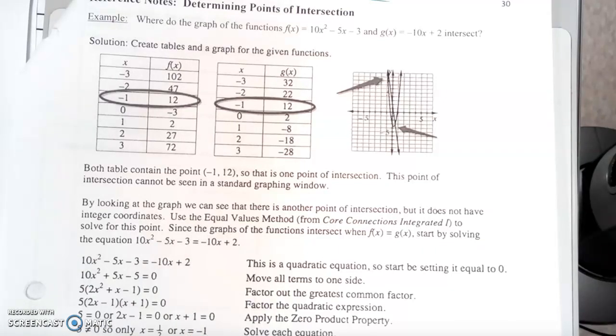They did it by adding the 10x over here, subtracting the 2x right here, that sets it equal to 0. That puts it in what we call standard form.